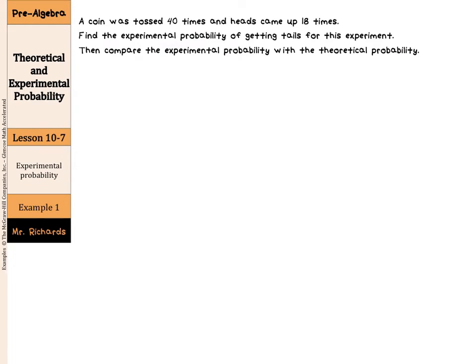A coin was tossed 40 times and heads came up 18 times. Find the experimental probability of getting tails for this experiment. Then compare the experimental probability with the theoretical probability.